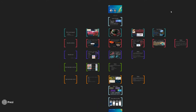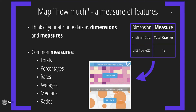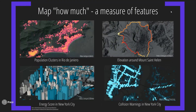The third section is mapping how much. The era of dumb defaults is ending. Mapping how much covers things like totals, percentages, rates, averages or medians, and ratios. You can show it by color, by size, or by both color and size. Examples include mapping population clusters, elevation around a mountain, energy score by building, and collision warnings aggregating points into hex bins.